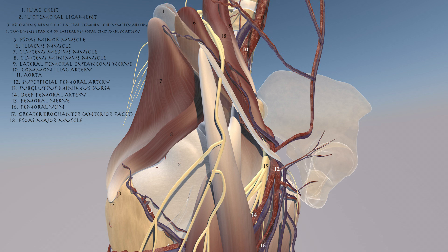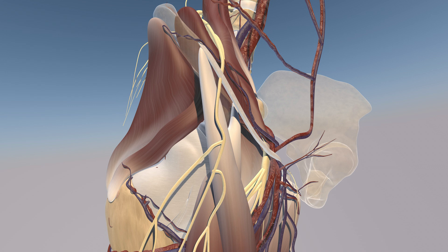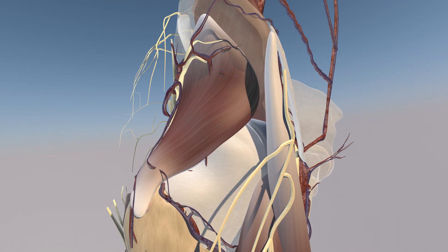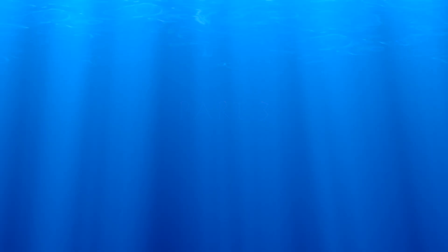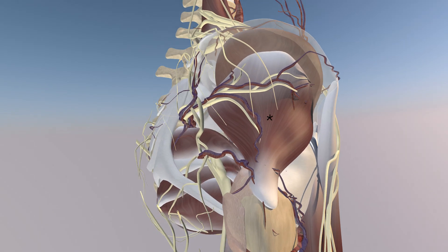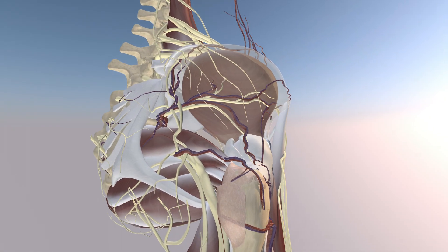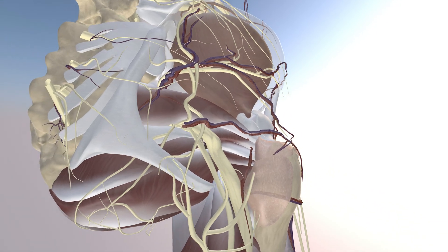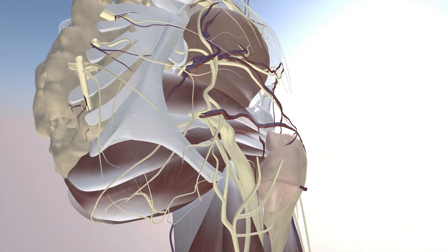We can appreciate the ascending branch of the lateral femoral circumflex artery. Now we're removing the gluteus medius muscle, and you can appreciate the gluteus minimus muscle underneath that.